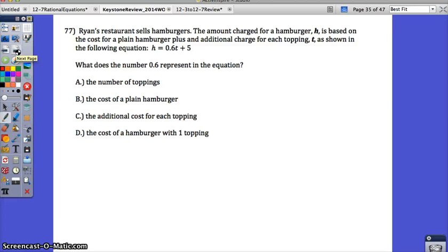Number 77. Ryan's restaurant sells hamburgers. The amount charged for a hamburger, H, is based on the cost for a plain hamburger plus an additional charge for, there's that word again, each topping. So each tells you to multiply. So you're going to have a charge, you're going to have some sort of money times T, okay? We don't know what that money is from there, but keep reading and you'll see it. As shown in the following equation, so 0.6T plus 5. What does the number 0.6 or 6 tenths represent in this equation?